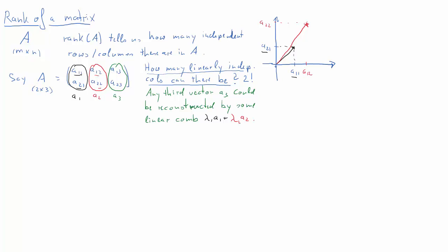If you have two linearly independent vectors, any further vector can be represented as a linear combination of these two. So the rank of matrix A in our particular case is at most two — smaller or equal to two. More generally, if we have any matrix with M rows and N columns, the rank of A is smaller or equal to the minimum of these two dimensions. Whatever is smaller — number of rows or number of columns — that is the maximum number of independent columns or rows we can have, and therefore the maximum value for the rank.